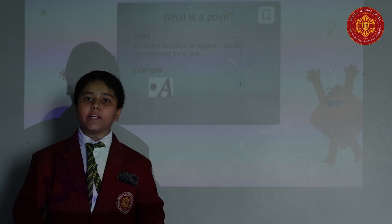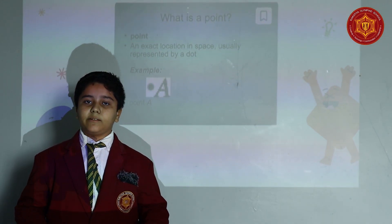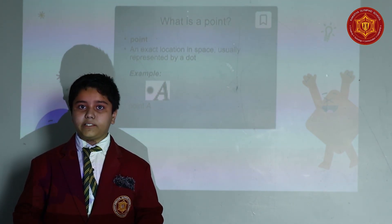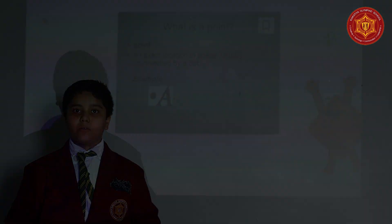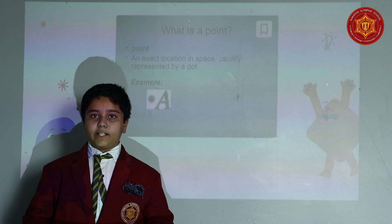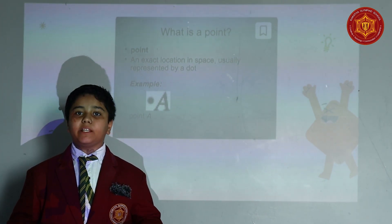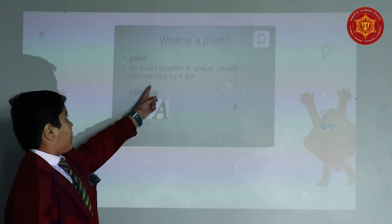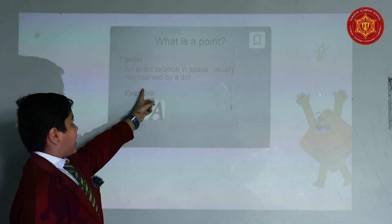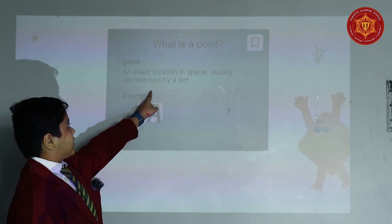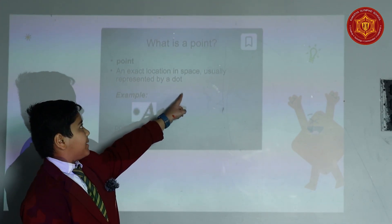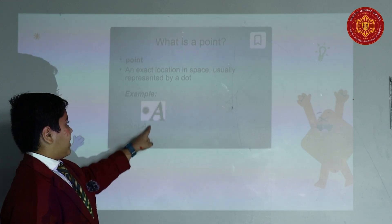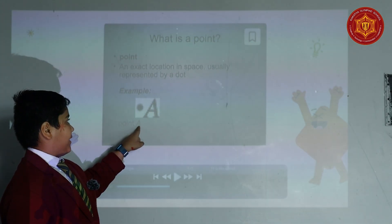Good morning everyone, my name is Jaye Dvitra. I am studying in Siksha Tata of KOS in Yamuna campus. Now my topic is about geometry, that is lines, angles and shapes. In lines, angles and shapes, there is a point. A point is an exact location in space, usually represented by a dot. Example: point A.